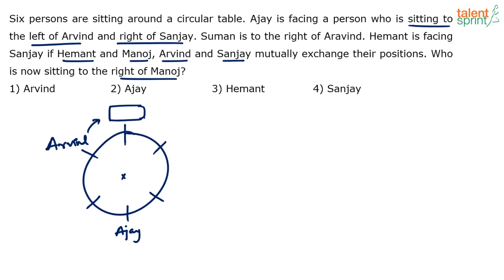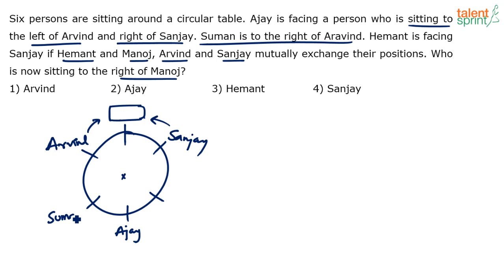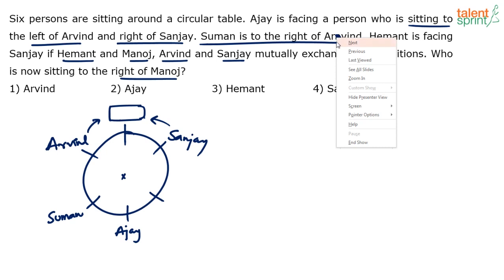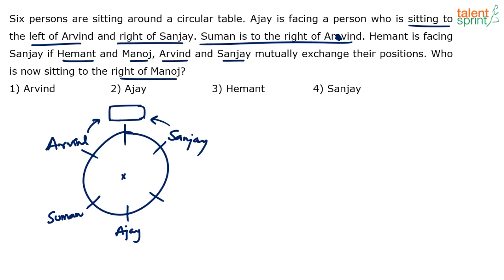The person Ajay is facing is to the left of Arvind and to the right of Sanjay. Right is anti-clockwise, so Sanjay is placed such that his right is that person. Three positions are now marked. Suman is to the right of Arvind — right is anti-clockwise — so Suman comes in that position. By the way, the name Arvind appears spelled two different ways in the problem, but it refers to the same person.